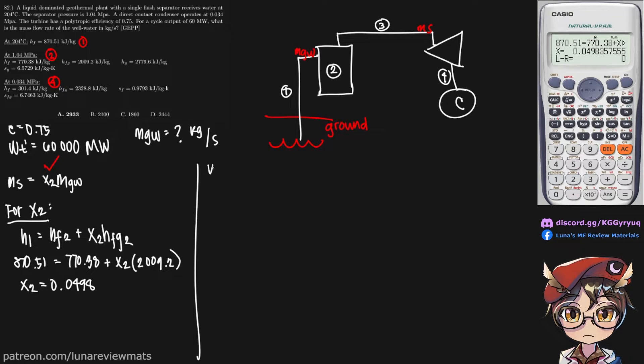So we know that the turbine work is equal to the mass of the steam times the change in enthalpy. Multiplied by our polytropic efficiency. So we do have our turbine work. So that is 16,000 MW. Or H sub 3.